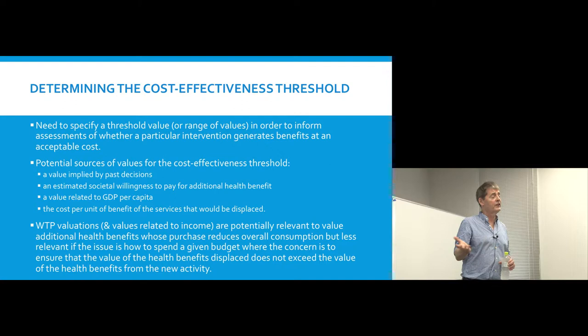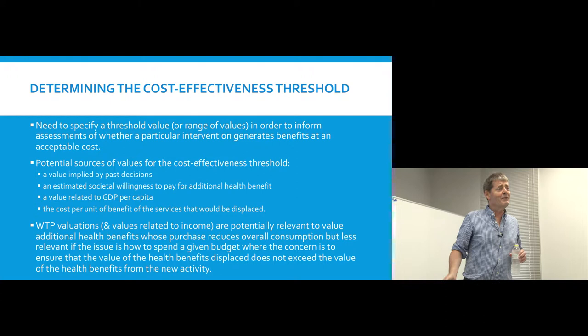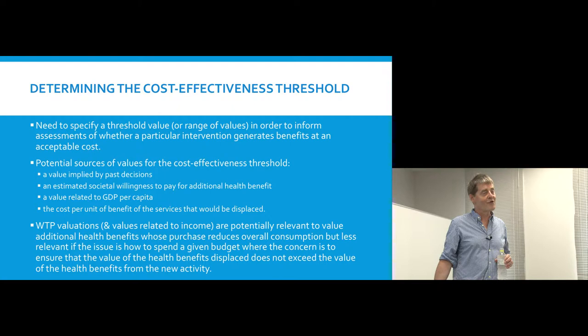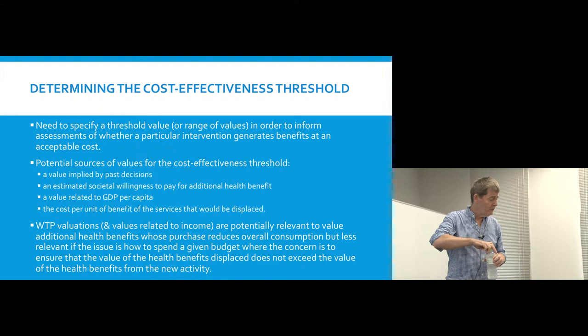For example, in Japan, would 10,000 yen per QALY gained be good value? Well, almost certainly. Would 100,000? Yes. Would 20 million yen per QALY gained be good value? Probably not. There's a big gap between 100,000 and 20 million — where should the threshold lie?